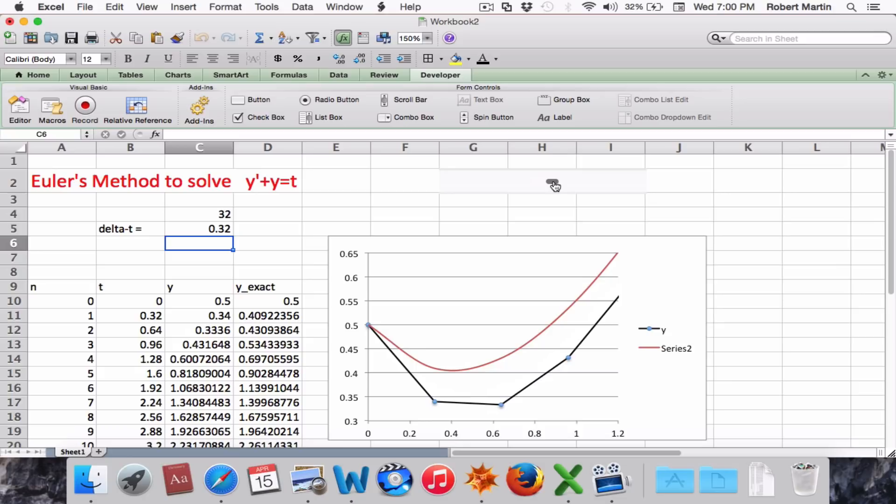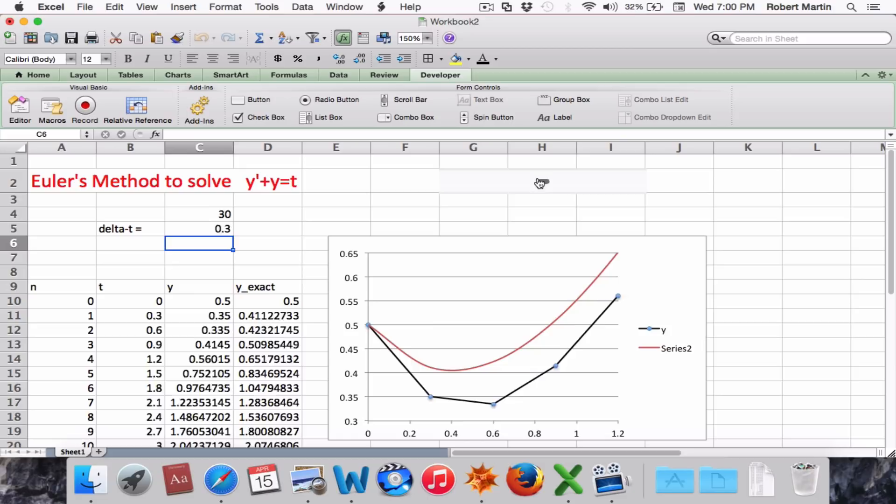Now adjusting the scroll bar gives me different delta t values ranging from 0.1 up to 0.5. So again, notice how as we adjust delta t, the plot is accordingly changing, showing the solution for different delta t values. So of course, as delta t gets smaller, our solution improves.